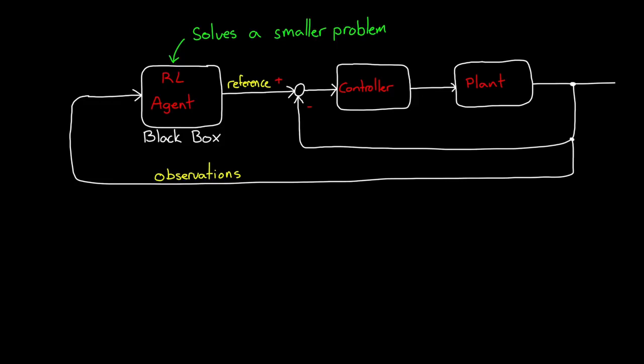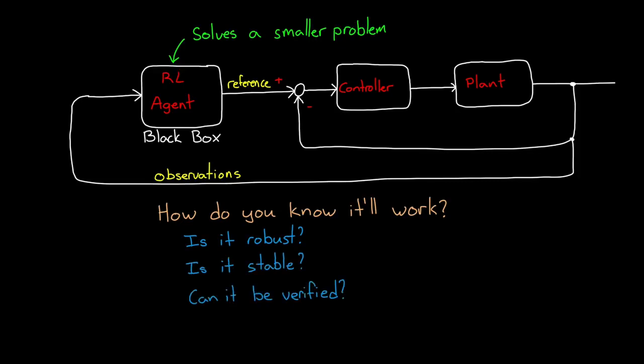Shrinking the agent obviously doesn't solve our problem. It just decreases its complexity. The policy is more focused, so it's easier to understand what it's doing. However, even with this, we're still left with the second question. How do you know the RL agent will work, regardless of its size? For example, is it robust to uncertainties? Are there stability guarantees? And can you verify that the system will meet the specifications?